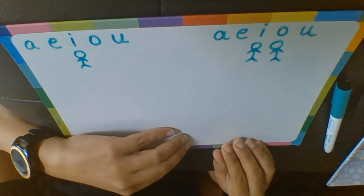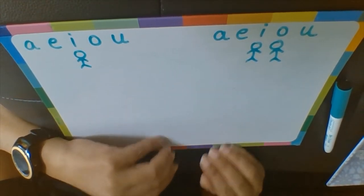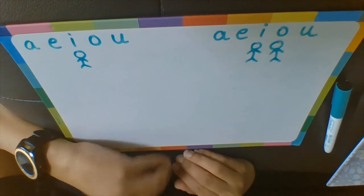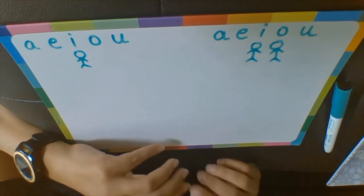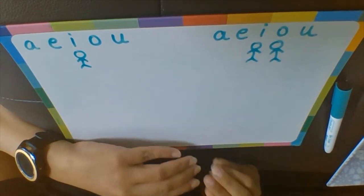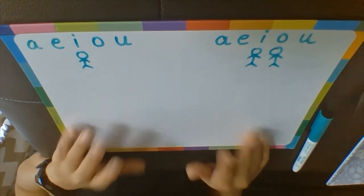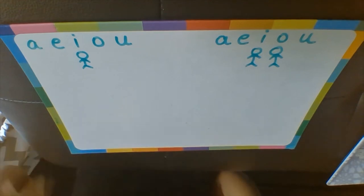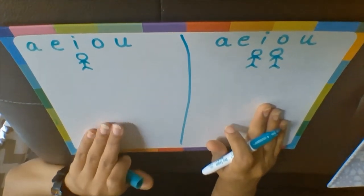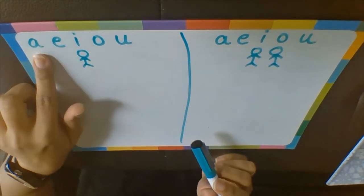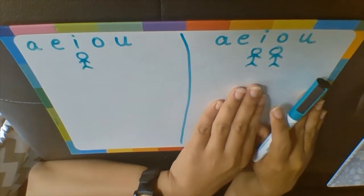My little one, and I'm sure most of your little ones, loves friends — they don't like being at home and are always looking forward to mingling with friends. Same with my little one; he loves playing with friends. So here, as you can see, I have two columns: one is for short vowels and one is for long vowels. The first vowel, A, can be read as a short vowel or a long vowel.